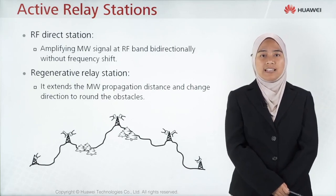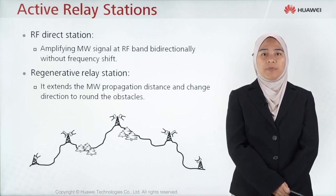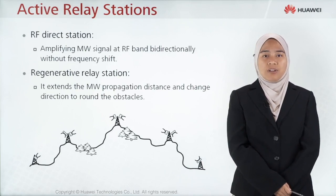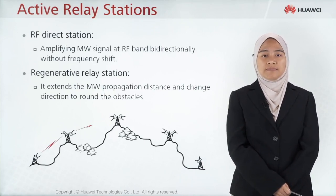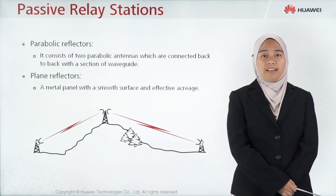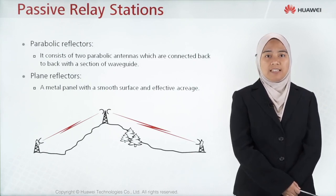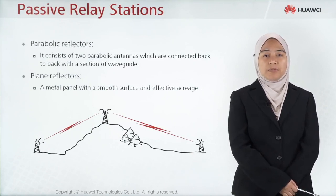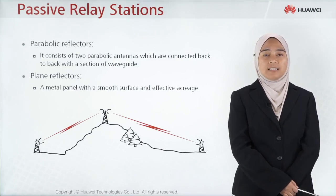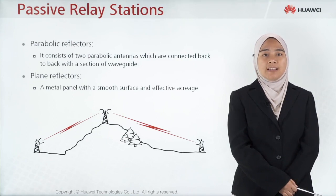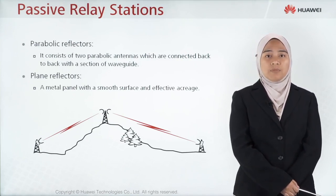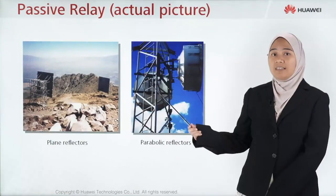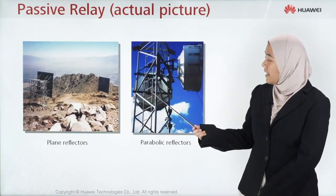For active relay stations, the RF direct station amplifies the microwave signal at RF band bi-directionally without frequency shift. The regenerative relay station extends the microwave propagation distance and changes direction to go around obstacles. There are two types of passive relay stations: parabolic reflectors, which consist of two parabolic antennas connected back to back with a section of waveguide, and the plane reflector, which is a metal plane with a smooth surface.